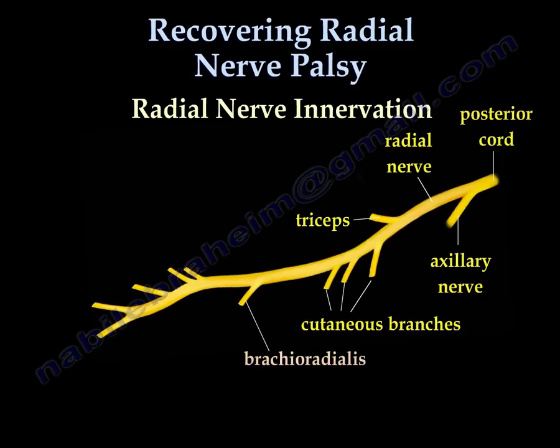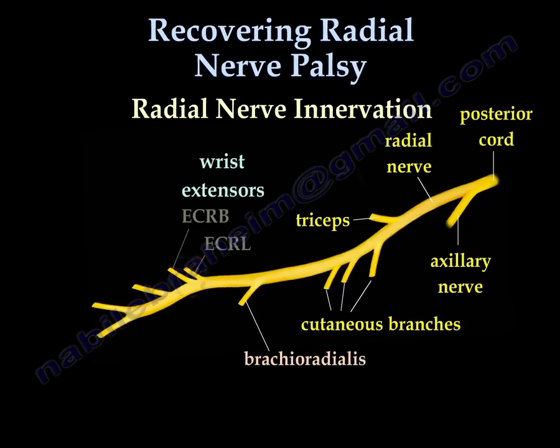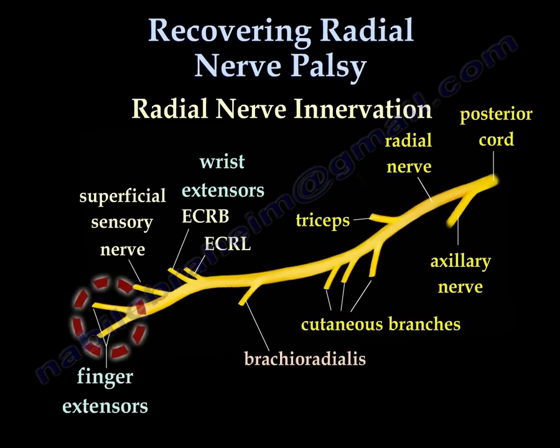The radial nerve then gives the brachioradialis, followed by the wrist extensors. After that, the radial nerve splits into the superficial sensory nerve and other branches that include the finger extensors.